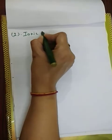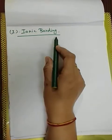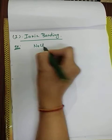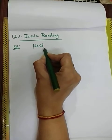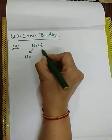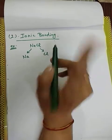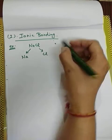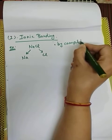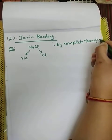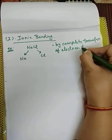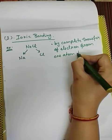तो first category है ionic bonding। यह ionic bonding बन रही थी दो ऐसे atoms के बीच में जिनमें से एक का nature electropositive हो और दूसरे का nature electronegative हो। इस ionic bond की formation कैसे होती है — यह ionic bond बनता है by complete transfer of electron from one atom to another।